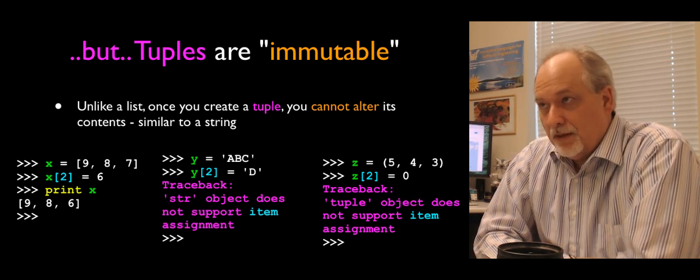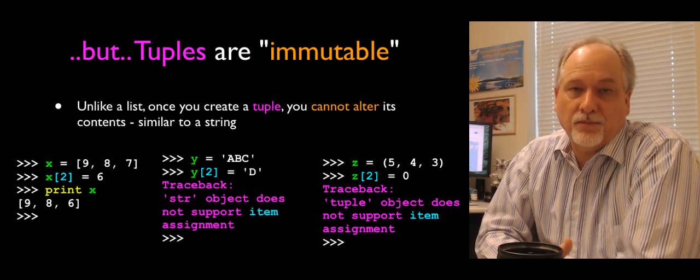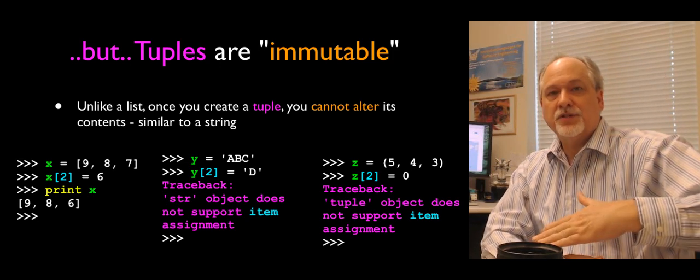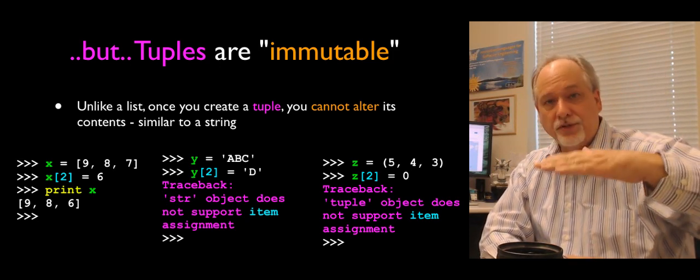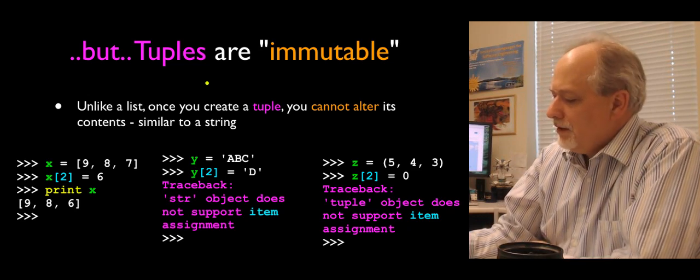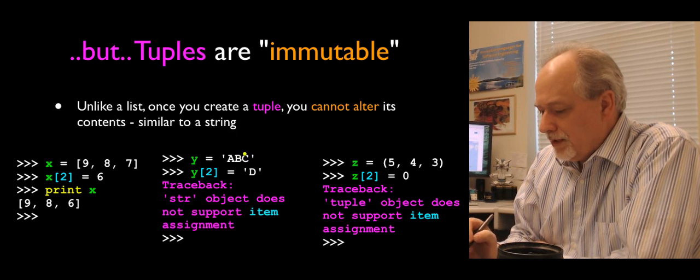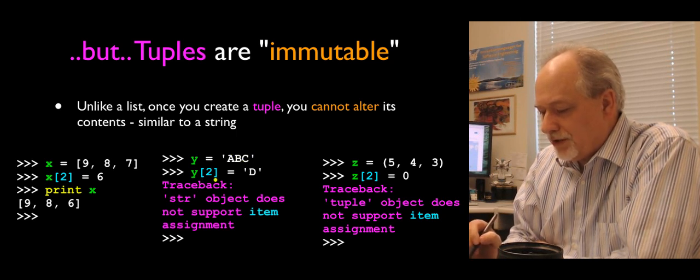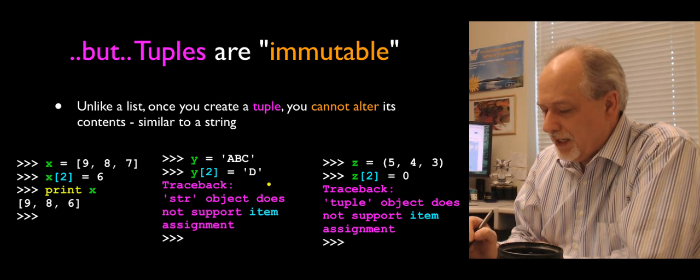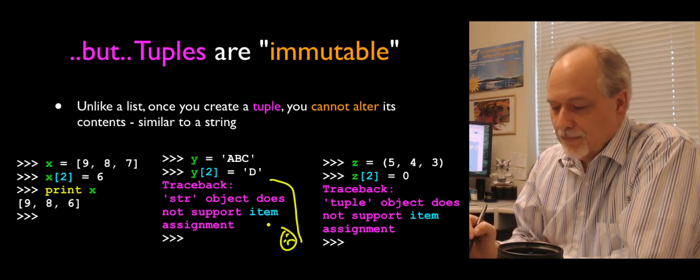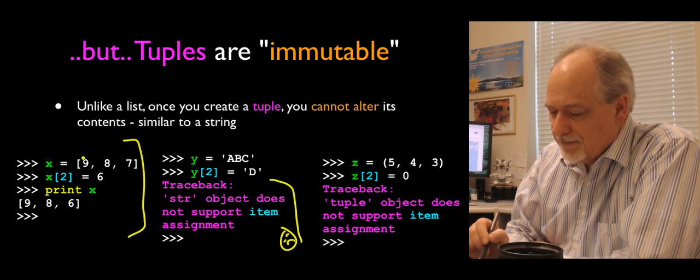But they're also different than lists in some real valuable ways. Tuples are immutable. If you recall when we talked about lists, we compared them to strings. Because both lists and strings are sequences of elements where the first one is 0, 1, 2, et cetera. But if we look at a string, for example, and we have a three-character string ABC, and we want to change the third character y sub 2 to D, it complains and says, no, you can't do that.